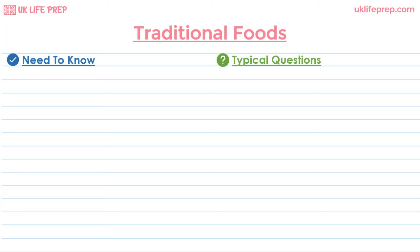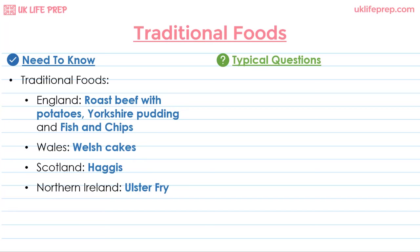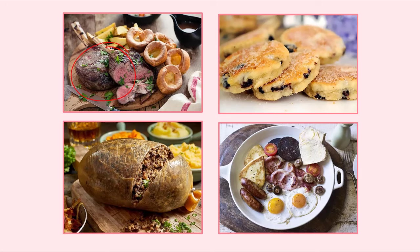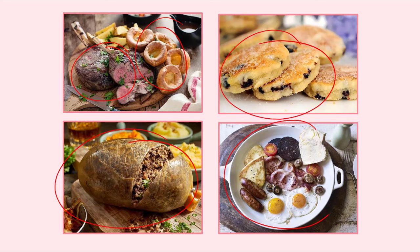Traditional foods of each country are also very common questions. In England: roast beef with potatoes and Yorkshire pudding, which is batter baked in the oven, as well as fish and chips. In Wales: Welsh cakes, a snack made from flour, dried fruits, and spices. In Scotland: haggis, which is sheep's stomach stuffed with other parts of the animal, vegetables, and oatmeal. In Northern Ireland: Ulster fry, which is a fried meal with bacon, eggs, sausage, black pudding, white pudding, tomatoes, mushrooms, soda bread, and potato bread.